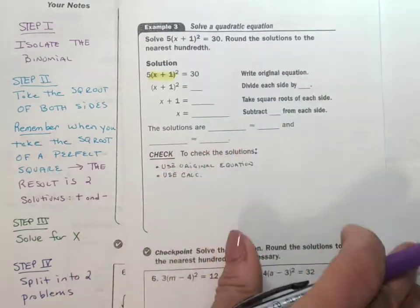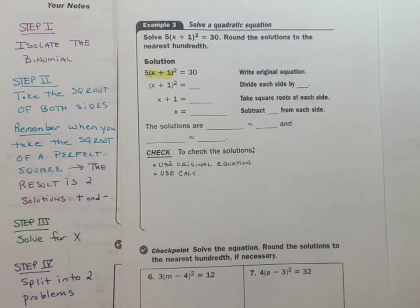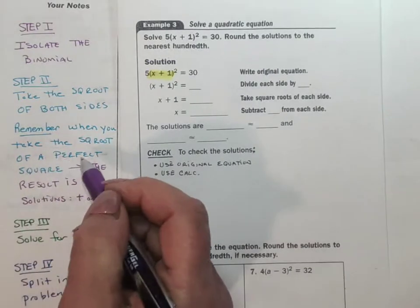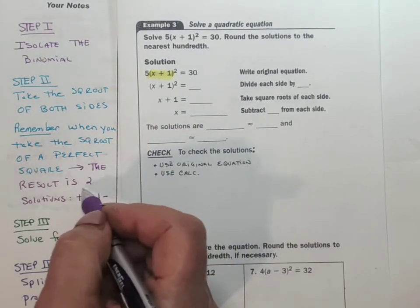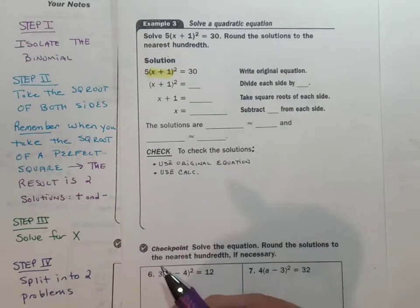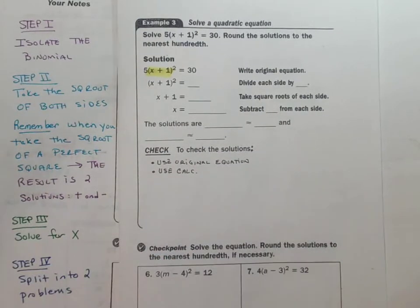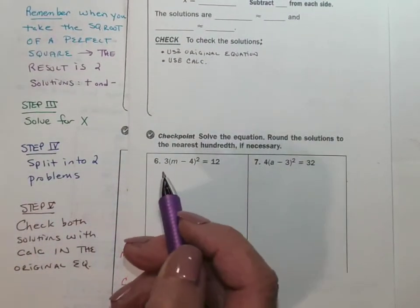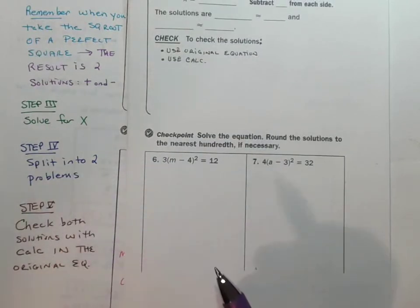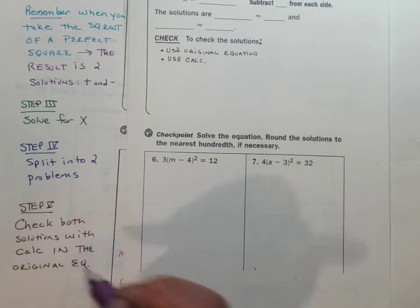Then step two is we're going to take the square root of both sides, and it's important to remember when you take the square root of a perfect square, the result is two solutions — you have a positive and a negative. We're then going to have step three: we have to solve for x. Step four, to do that we have to split it into two problems, and here we must check both solutions with our calculator in the original equation.